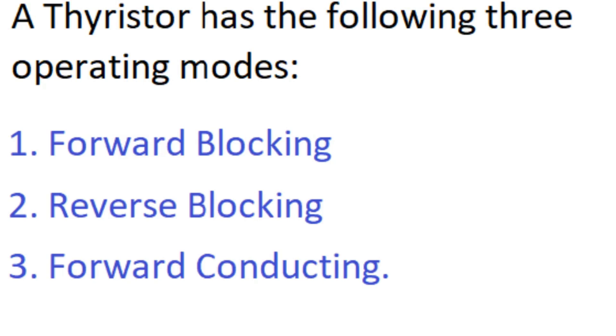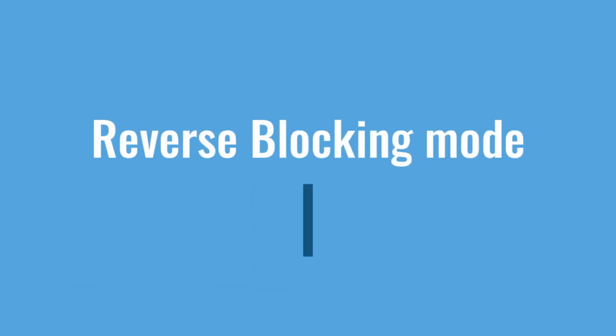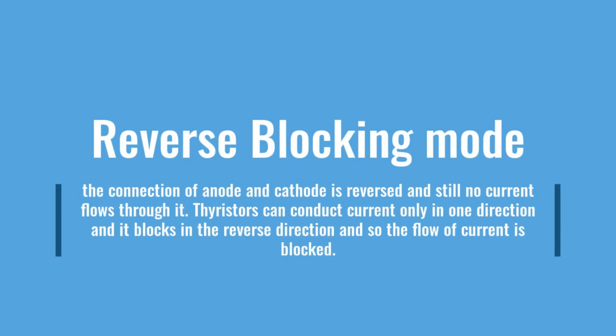The maximum reverse voltage at which a thyristor starts conducting is known as the reverse breakdown voltage. A thyristor has three operating modes: (1) forward blocking, (2) reverse blocking, and (3) forward conducting. In forward blocking mode, forward current conduction is blocked — the upper and lower diodes are forward biased but the center junction is reverse biased, so the thyristor does not turn on and no current flows. In reverse blocking mode, the anode and cathode connection is reversed and still no current flows; thyristors can conduct in only one direction and block in the reverse direction.